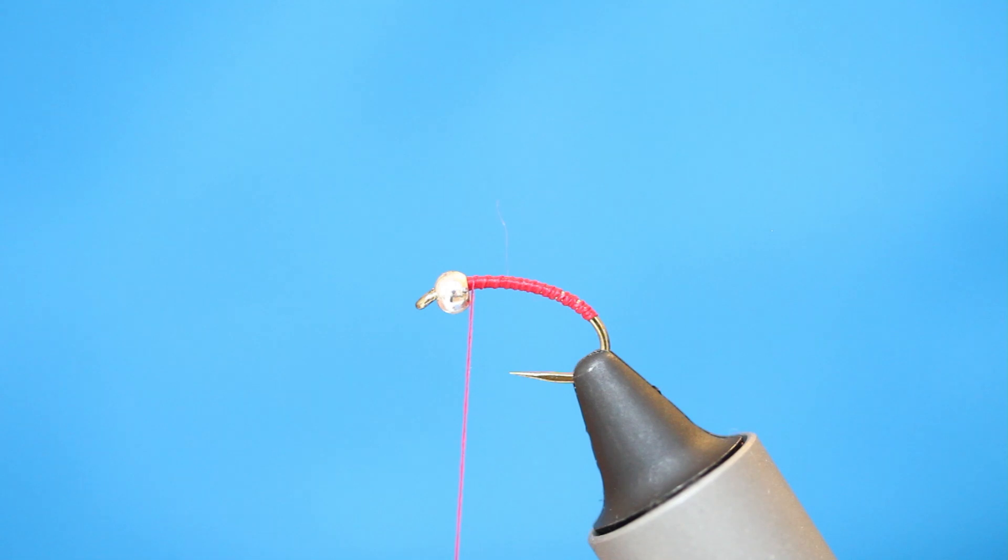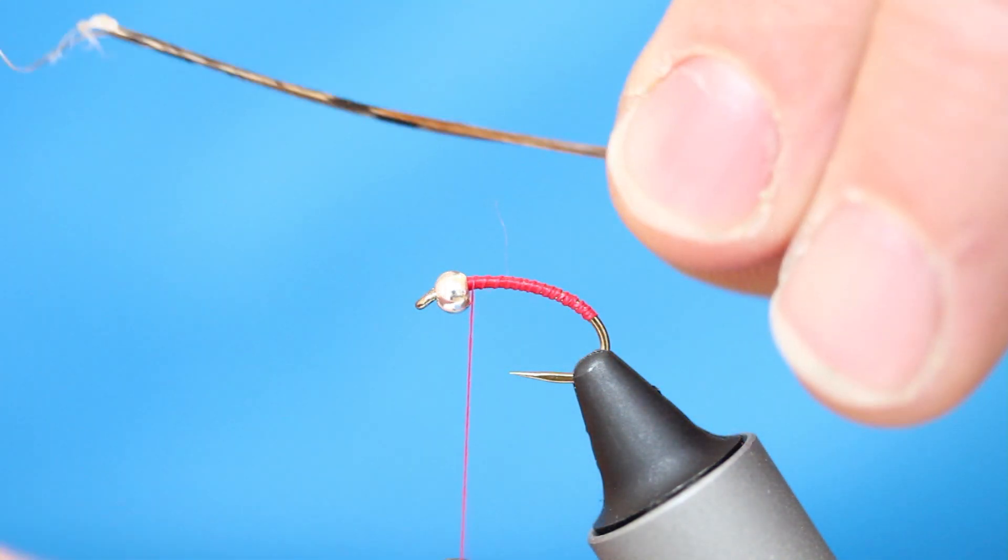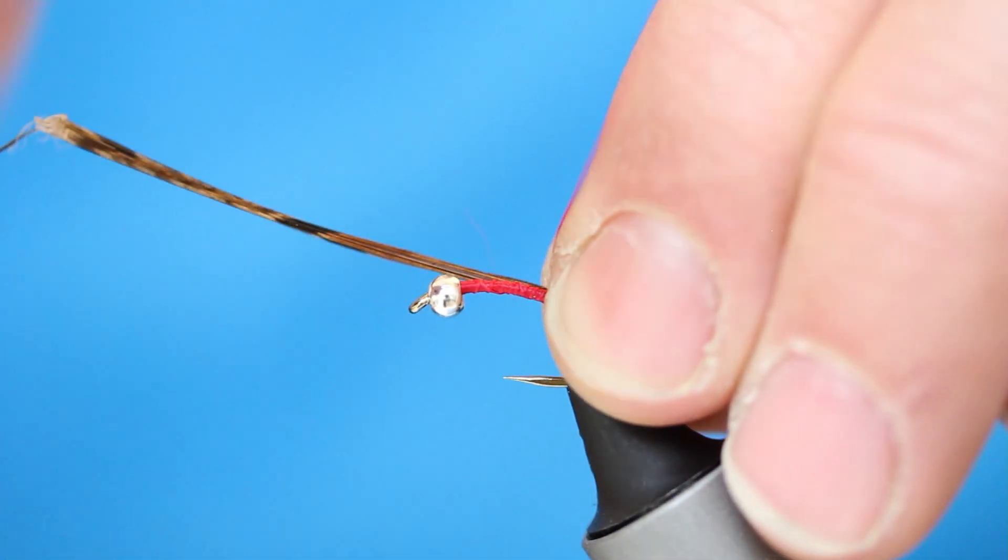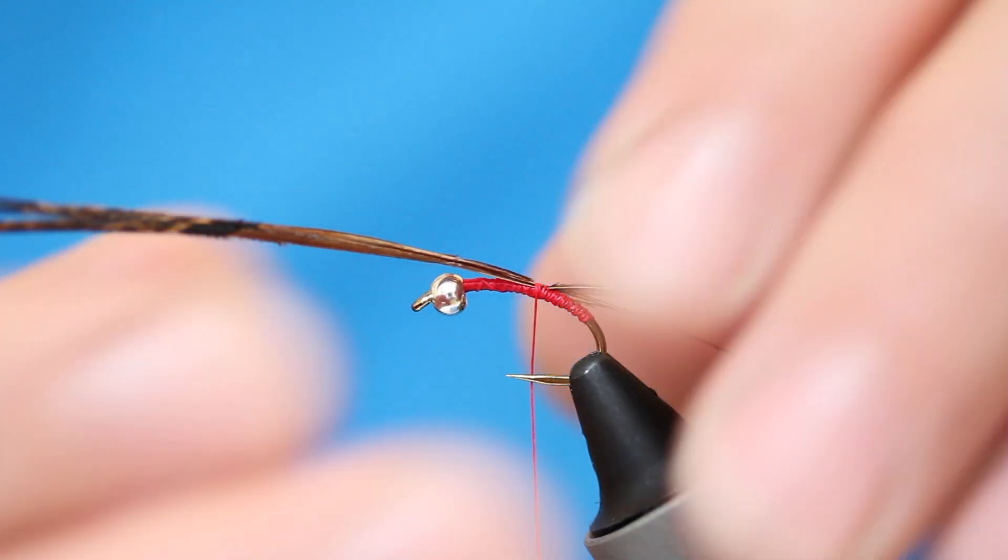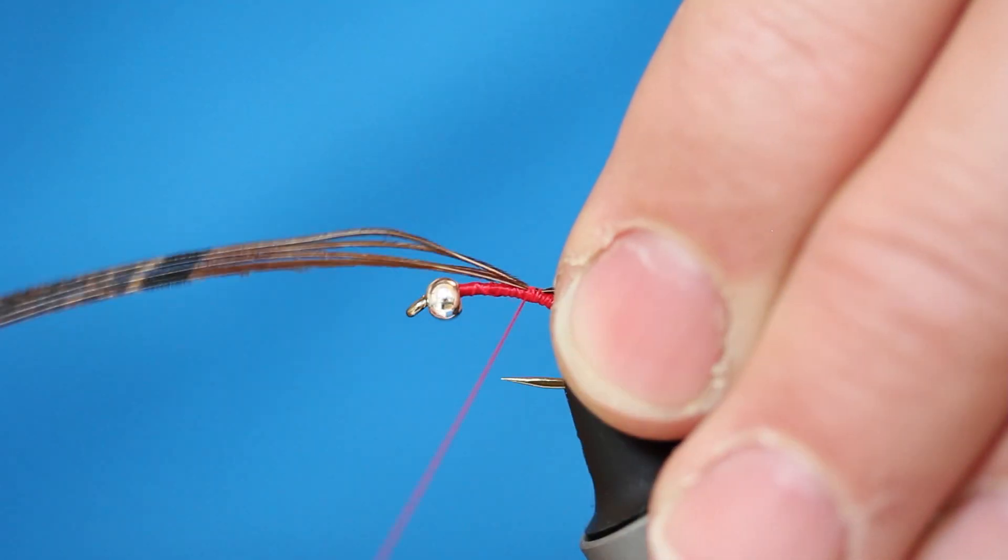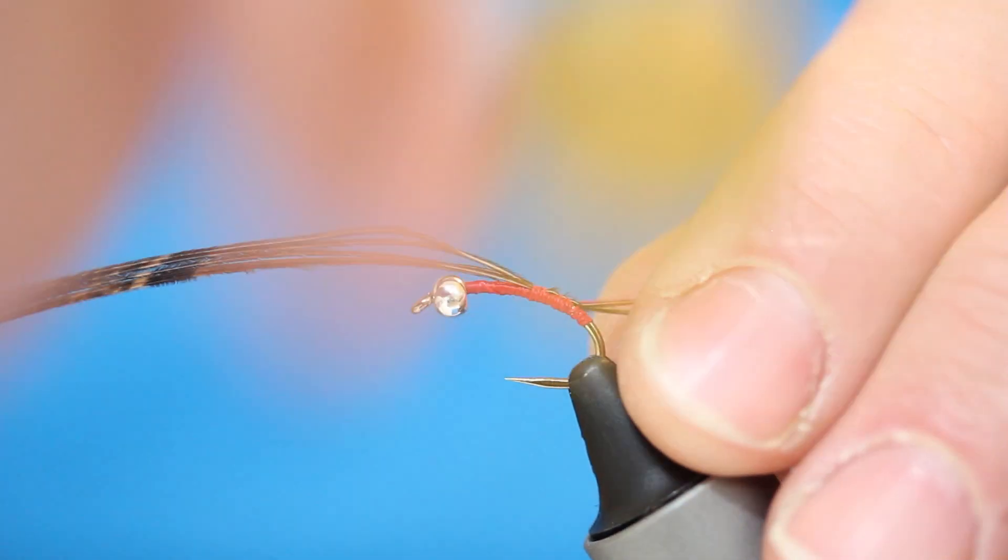I'm now going to use some pheasant tail for the tail and we only want a few fibers for this. I'm just bringing the thread back down to tying end point. Just pinching a loop here. Do a couple of turns to secure it. And I'll pull the fibers until I'm happy with the tail length. A little tweak there.